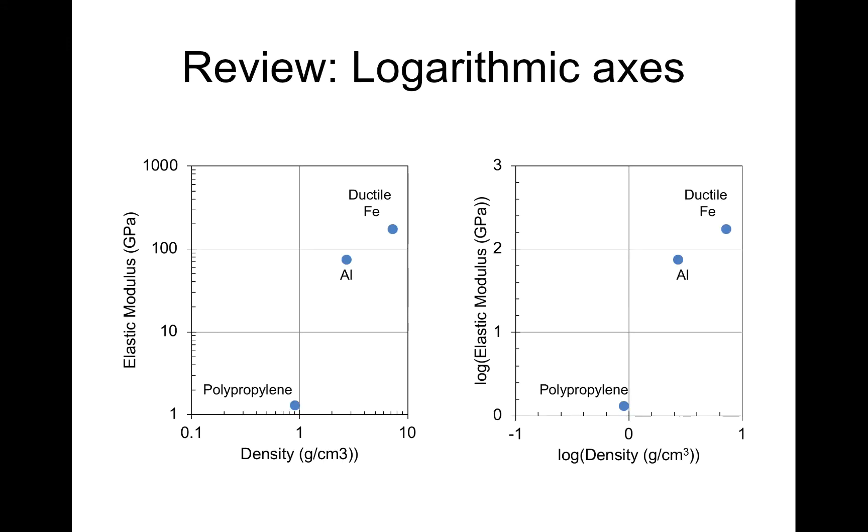First, before we do that, we'll review logarithmic axes real briefly. So on the left, this is the type of plot we've been seeing. It's an elastic modulus plot in gigapascals versus density, and I've only shown it for three different materials, polypropylene, aluminum, and iron.